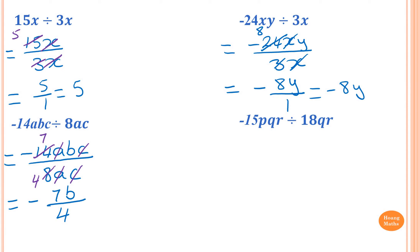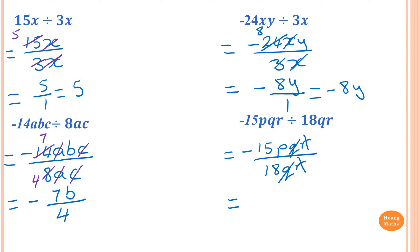Negative 15pqr divided by 18qr. Write in fractions first: minus 15pqr all over 18qr. Cancel out q and r. A negative and a positive give you negative straight away. 15 and 18 are both divisible by 3, so 15 divided by 3 is 5 and 18 divided by 3 is 6. So the answer is negative 5p over 6.